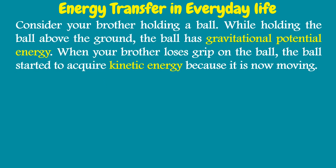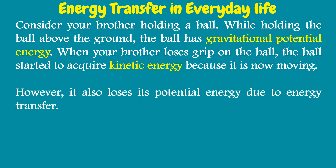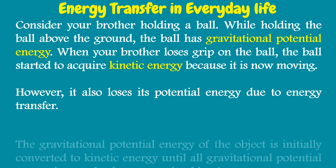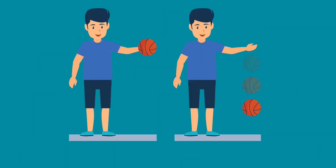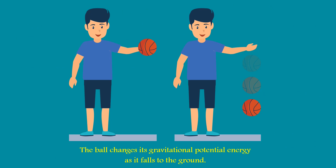Consider your brother holding a ball above the ground — the ball has gravitational potential energy. When he loses grip on the ball, it starts to acquire kinetic energy because it is now moving. However, it also loses its potential energy due to energy transfer. The gravitational potential energy is initially converted to kinetic energy until all gravitational potential energy is completely converted to kinetic energy as the ball falls to the ground.